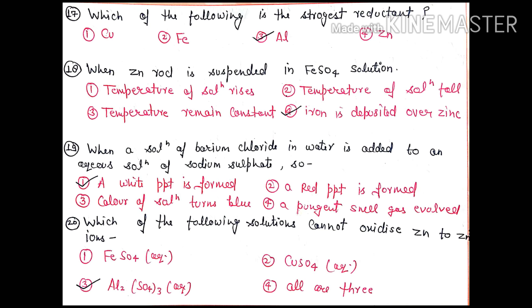Question 20: Which of the following solutions cannot oxidize zinc to zinc 2+? Iron and copper's aqueous solutions are less reactive than zinc, so they will not oxidize it. Only Al2SO4, aluminium sulfate, will oxidize zinc. So the right option is 3.